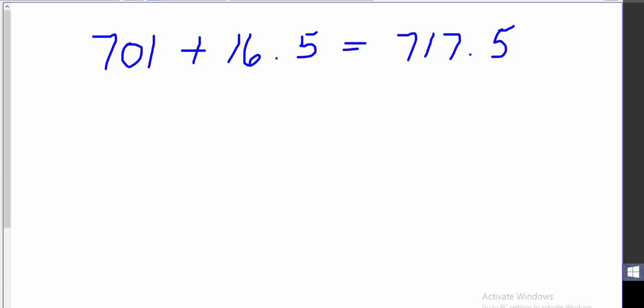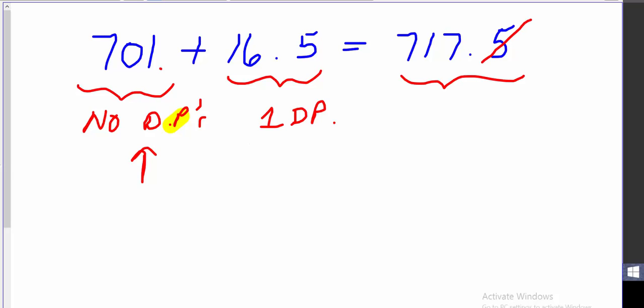In the first number, I really have no decimal places. My decimal, if I wrote it in, would be right after the one. So here I have no decimal places. In the second one, I have one decimal place. So my answer must be reported to the least number of decimal places in my data. That's going to be this one. Therefore, I cannot have any decimal places in my answer. But before I just get rid of a 5, I need to think about whether it's big enough to round up the next value. And yes, it is. My 7 can be rounded up to an 8. And so I go ahead and I report that it's 718. And there's my answer.